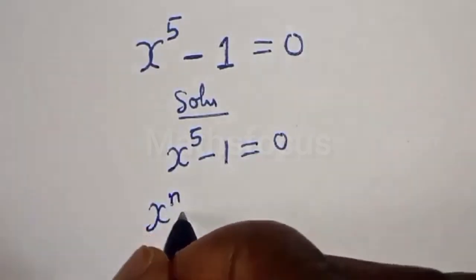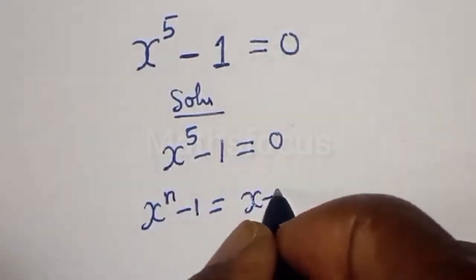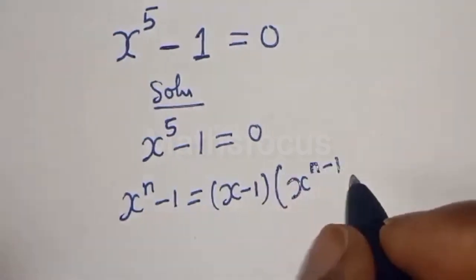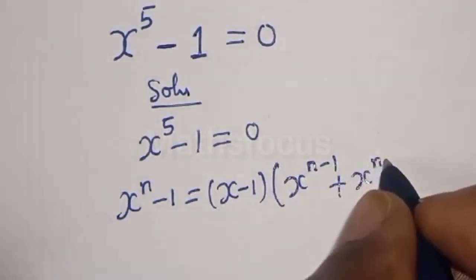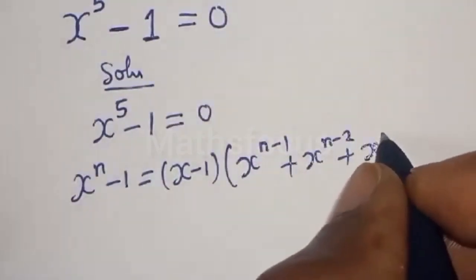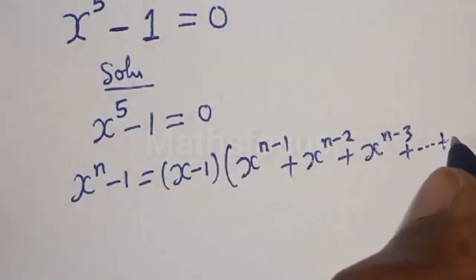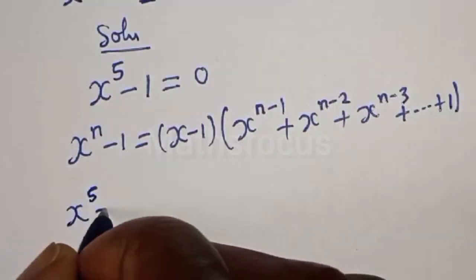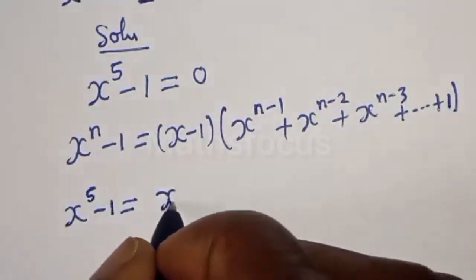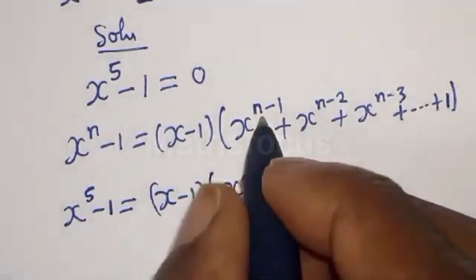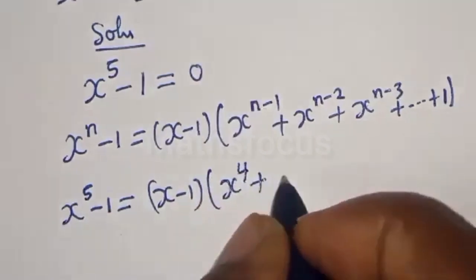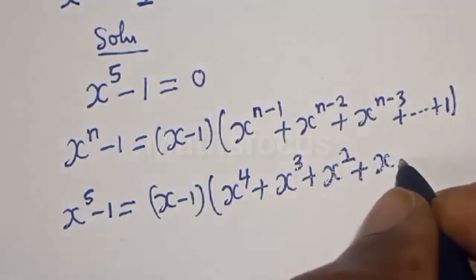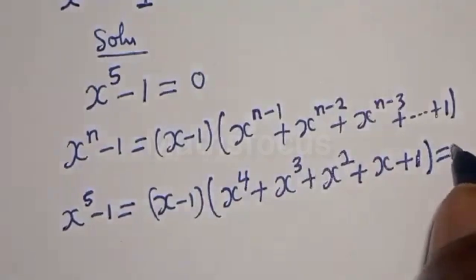Now take note of this: if you have x raised to power n minus 1, this is equal to x minus 1 bracket, times x raised to power n minus 1, plus x raised to power n minus 2, plus x raised to power n minus 3, and so on down to 1. So x raised to power 5 minus 1 equals x minus 1 bracket, x to the power 4, plus x to the power 3, plus x squared, plus x, plus 1, is equal to 0.